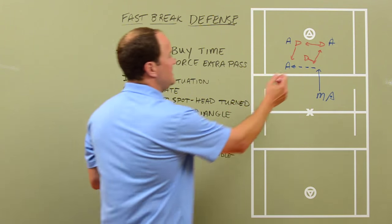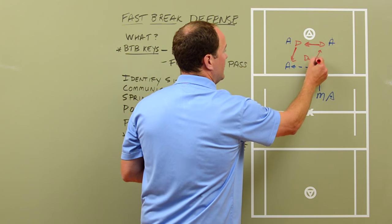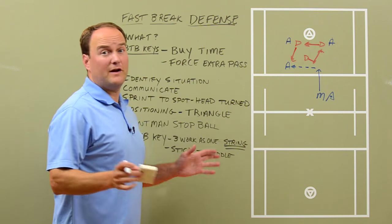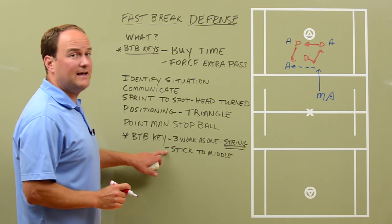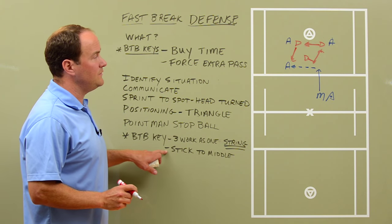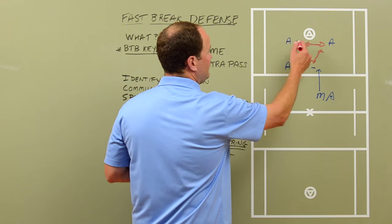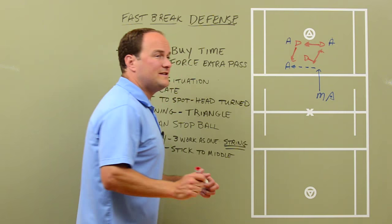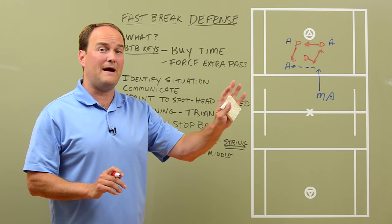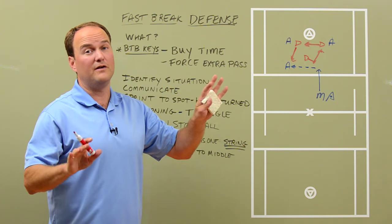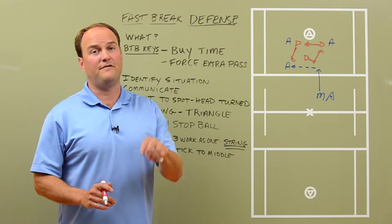As one moves up, all three are moving together as a unit as if there's string attached between the three of us in that triangle. Another BTB key to defending a fast break successfully is keeping your stick high to the inside. As these defenders are operating, they're always keeping their stick high to the inside so they can pick off any skip passes or at the very least knock the ball down. Those are some real basic keys to defending a fast break.